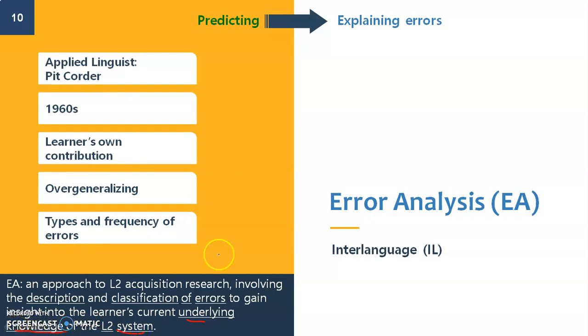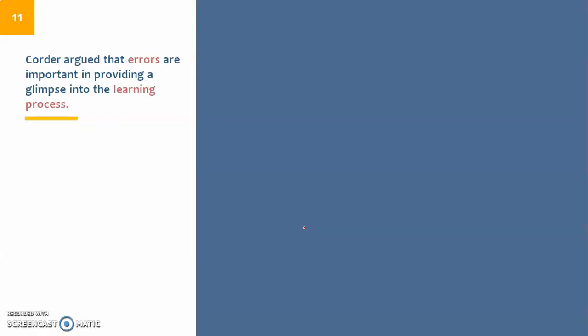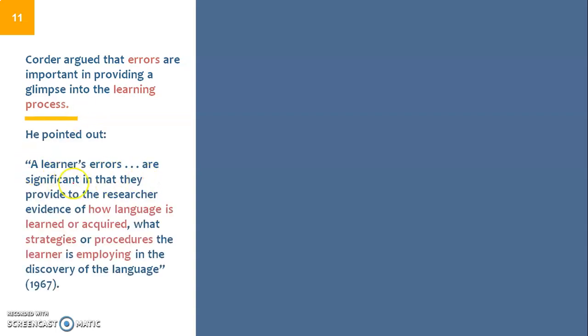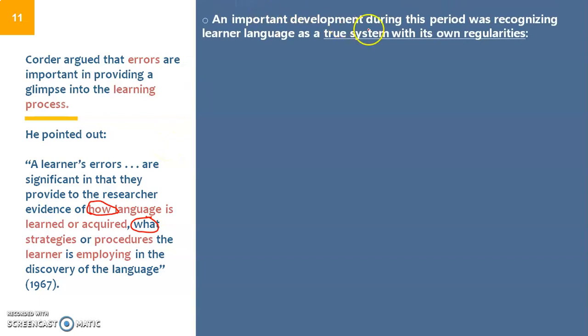To begin with, let's look into Corder's definition. Corder argued that errors are important in providing a glimpse into the learning process. To understand how second language learning happened, we should understand the errors and how they happen. He said a learner's errors are significant in that they provide to the researcher evidence of how the language is learned or acquired, what strategies are being used by the learner in the discovery of the language.